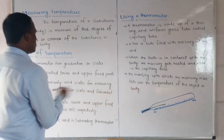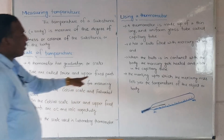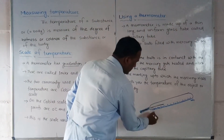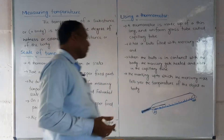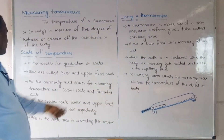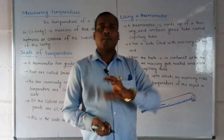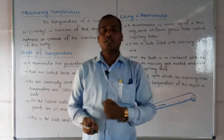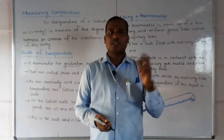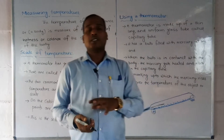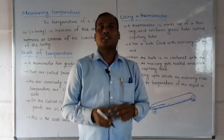A thermometer has markings called scales. There are lower and upper fixed points — the lower is the minimum and the upper is the maximum. The two commonly used scales for measuring temperature are the Celsius scale and the Fahrenheit scale. In India we commonly use the Celsius scale, although Kelvin is the SI unit used universally.